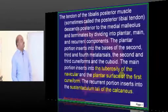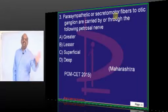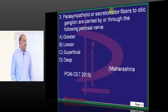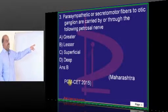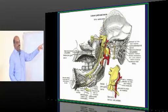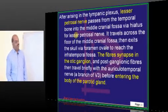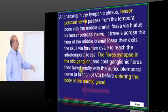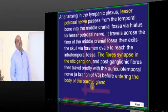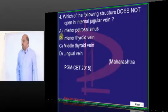One question will definitely come on one of the parasympathetic ganglia — ciliary ganglion, otic ganglion, etc. It is the lesser petrosal nerve which passes from the temporal bone in the middle cranial fossa and synapses with the otic ganglion. The postganglionic fibers ultimately go and supply the parotid gland.